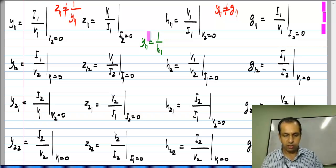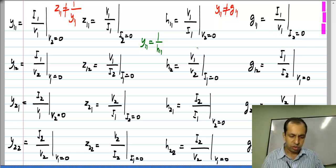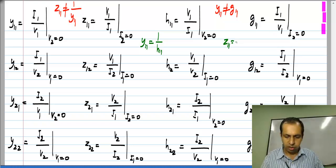Similarly, both Z11 and G11 are measured with port 2 open circuited. So Z11 is 1 by G11.